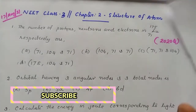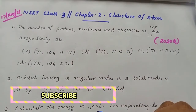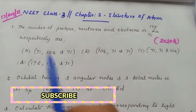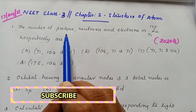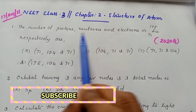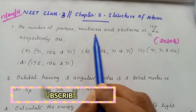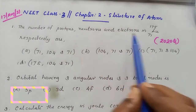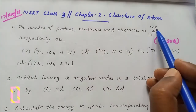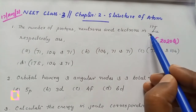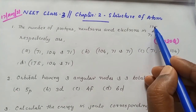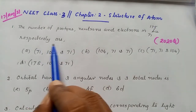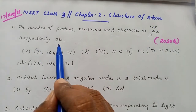Here we consider only 3 questions. The first question is the number of protons, neutrons, and electrons in lutetium. Its atomic number is 71 and mass number is 175.